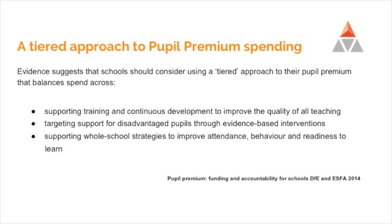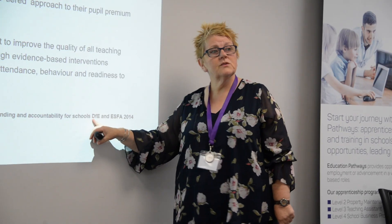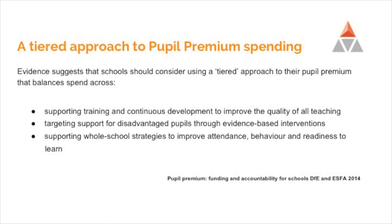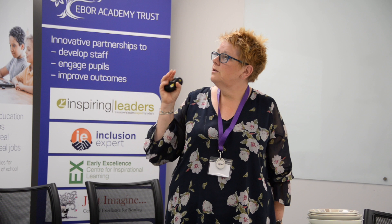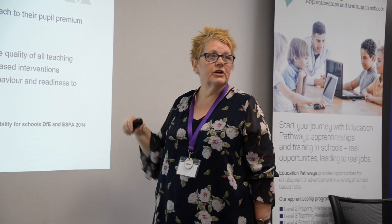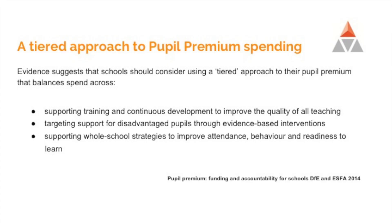In terms of what the evidence and the DFE say, they suggest a tiered approach — that is the best approach — thinking about how you're going to deal with it from three different areas. The first is improving the quality of teaching for all children. If you improve the quality of teaching for all children, then obviously that will have an effect on disadvantaged children. Then for the disadvantaged population, make sure that what you're giving them in addition is actually effective.